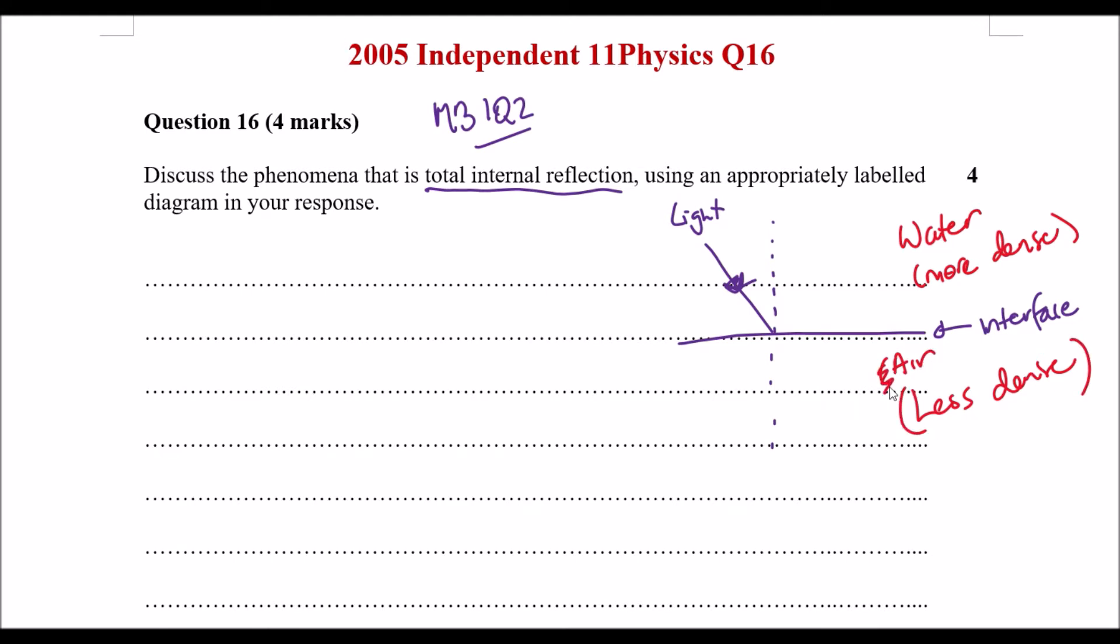Now in this process, at a particular angle, this angle here we call that the critical angle, this bit here. If we reach the critical angle, we can actually get a light ray that actually refracts parallel to the interface, or we could say perpendicular to the normal line.